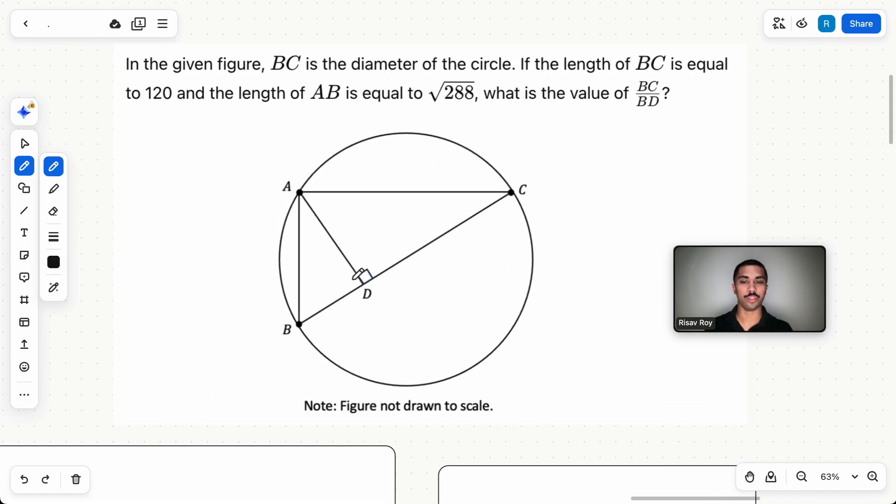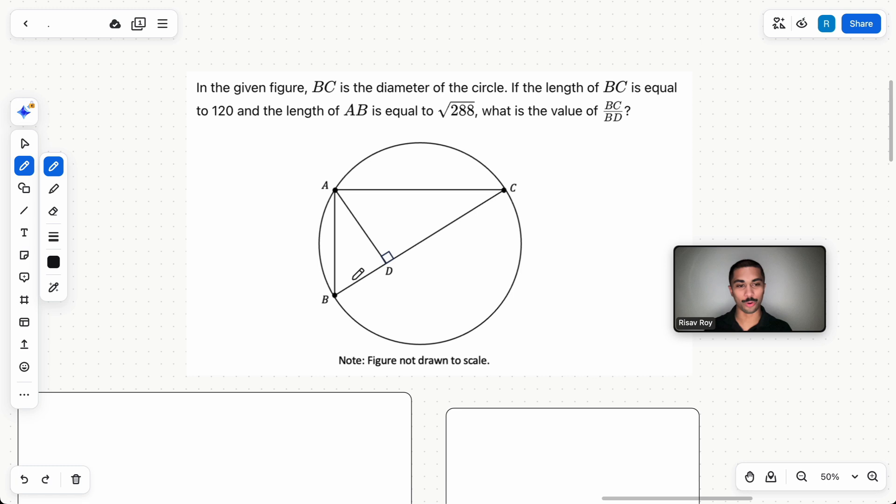So what we need to know for this question is the inscribed angle theorem, which sounds pretty complicated, but all it means is that if A, B, and C are three points on a circle and there are lines connecting A, B, and A, C, just like we have here, this angle A is going to be exactly half of whatever arc is created by BC. So do you see this arc right here? BC is 180 degrees. That's in degrees, that's what the arc length is. So that means A is going to be exactly 90 degrees. We need this piece of information to solve this question.